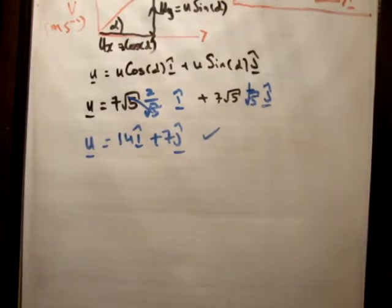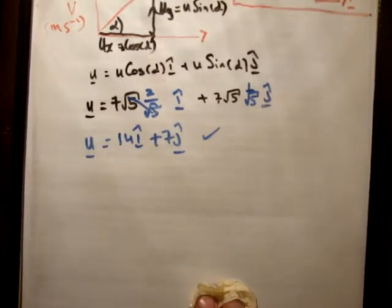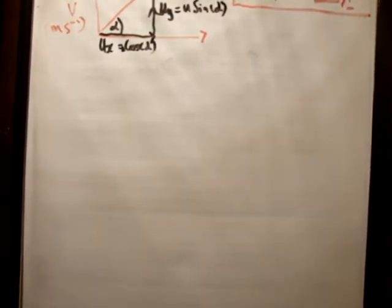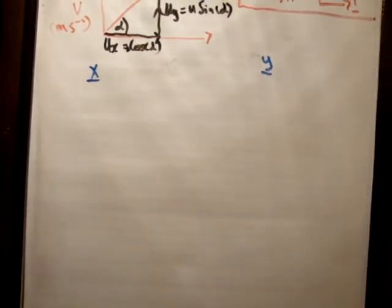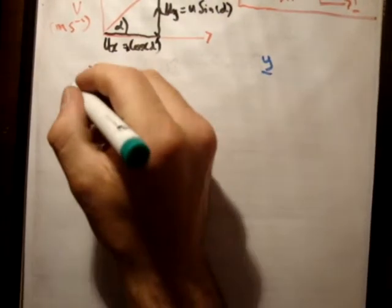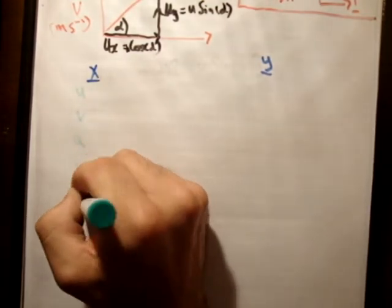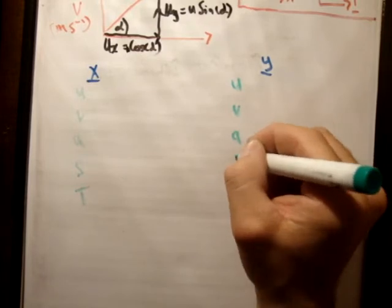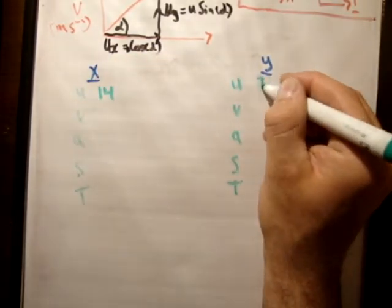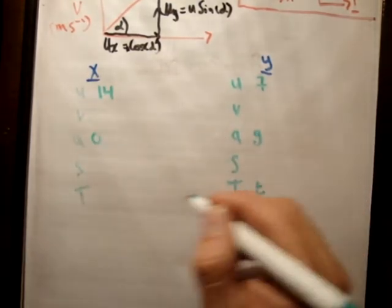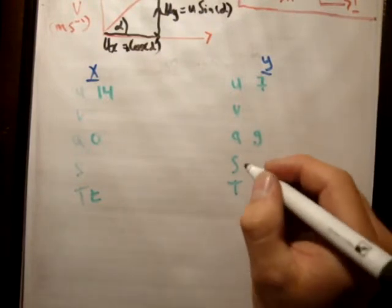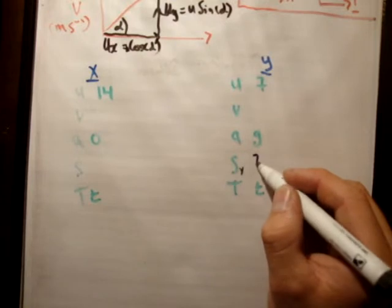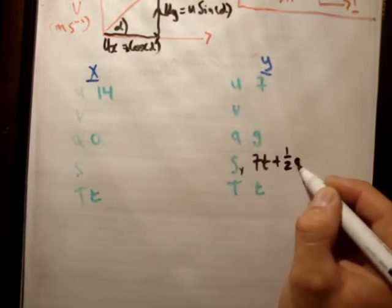Next part of the question says we're asked to find its horizontal range. So we need uvast for that. When it's at its maximum range, we know that s_y is equal to 0. So s_y is equal to ut plus 1/2 at squared. So 7t plus 1/2 gt squared.